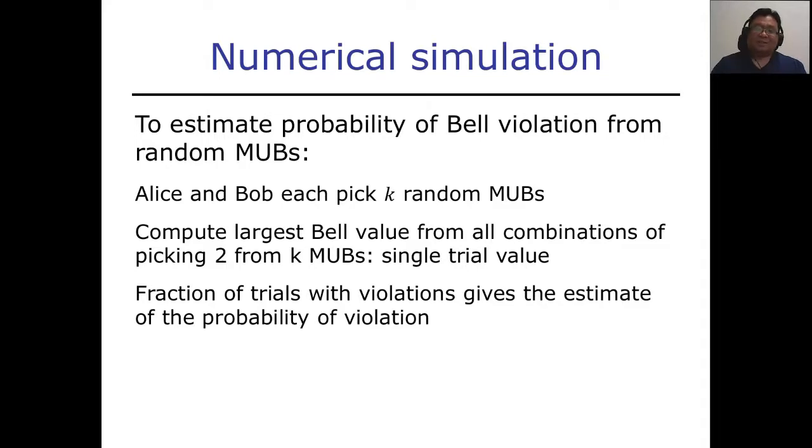In order to estimate the Bell violation from random MUBs, we perform the following numerical experiment. In each trial, Alice and Bob will fix k random MUBs. And since we are testing violation of Bell inequalities with two inputs, they have to consider all the Bell values for picking two MUBs out of the k set of MUBs. The one that gives the largest Bell value will give the value for that trial. You just have to repeat this many times, and the fraction of trials with a violation will determine the estimate of the probability of violation.